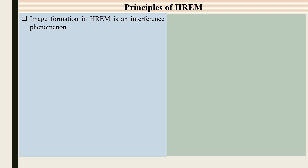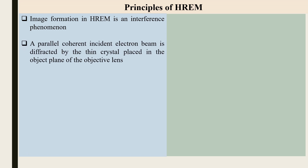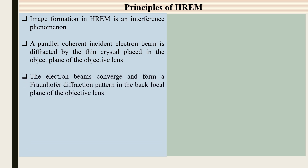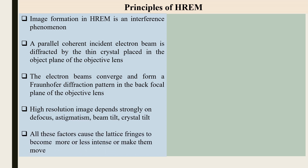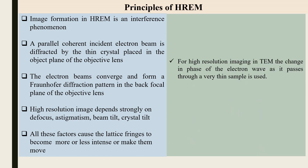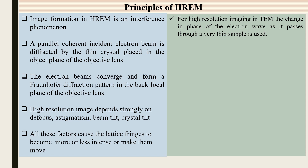For high resolution electron microscopy, the image formation is an interference phenomenon. A parallel coherent incident electron beam is diffracted by a thin crystal placed in the object plane of the objective lens. The electron beams converge and form a Fourier diffraction pattern in the back focal plane of the objective lens. The high resolution image depends strongly on defocus, astigmatism, beam tilt, and crystal tilt — all these factors cause lattice fringes to become more or less intense or to move.